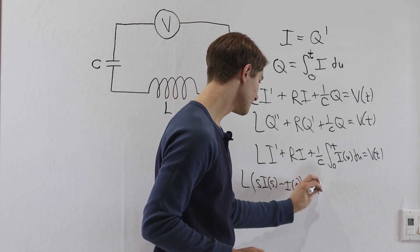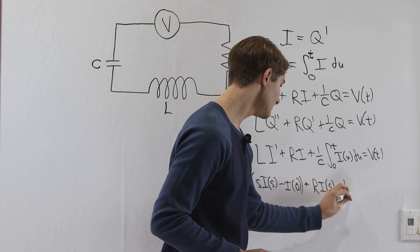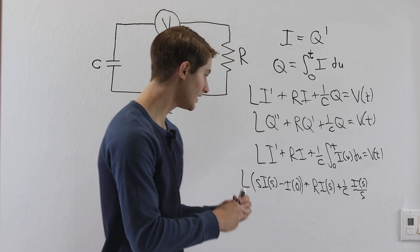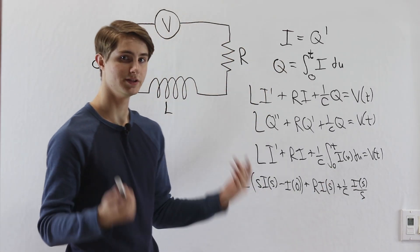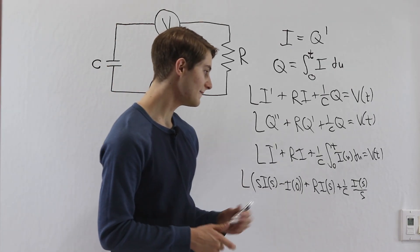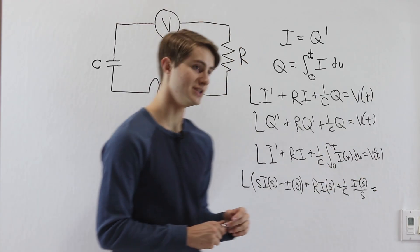And then we have plus r times i of s plus 1 over c i of s over s. And this i of s over s part comes from the integral. This other part is from the Laplace transform of the derivative. Again, you can check the description for that.